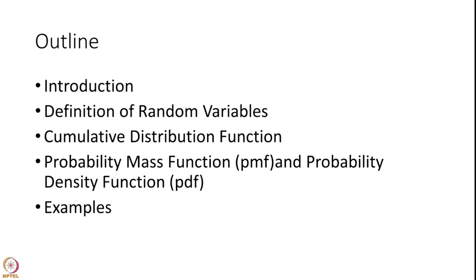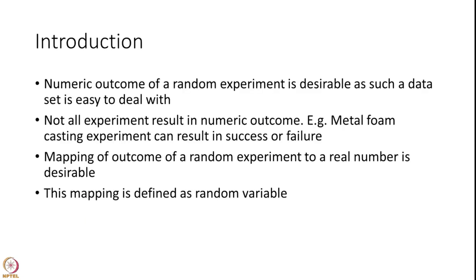In this particular lecture, I am first going to make an introduction — why do we need a definition of a random variable? Then we will define the random variable. Every random variable has one quantity attached to it which is called the cumulative distribution function. Then we will define two kinds of random variables: one is discrete and the other is continuous. For discrete we will define the probability mass function, and for continuous random variables we will define probability density functions. And at the end we will give some examples.